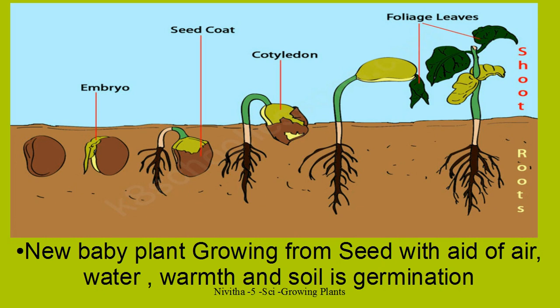Seed to seedling to a small baby plant. These are the roots — this is how the root grows under the soil, and the shoot is the portion of the plant above the soil. A new baby plant growing from a seed with the aid of water, warmth, soil, and sunlight is called germination.